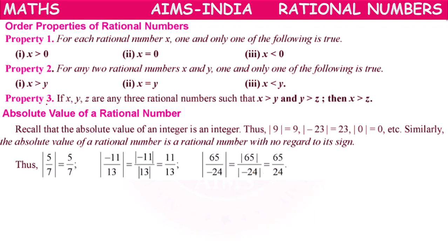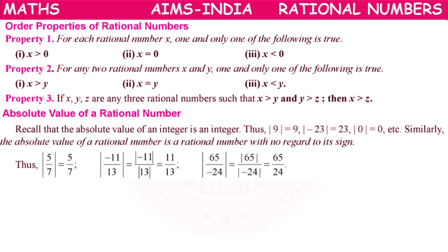So these three properties are considered as order properties of rational numbers. First property: when there is one rational number. Second property: when there are two rational numbers. Third property: when there are three rational numbers — what conditions are to be followed.